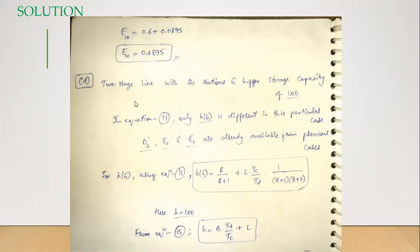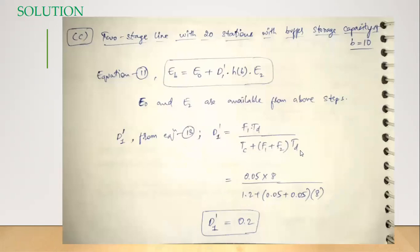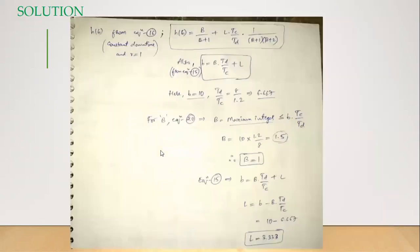For a two-stage line with 20 stations and buffer storage capacity of 100, only h(b) is different in equation one. D1-dash, E0, and E2 remain the same as before, because no parameters have changed — f1, f2, TD, and TC are all the same. We are still considering only a two-stage line, so d1-dash retains the value 0.2.